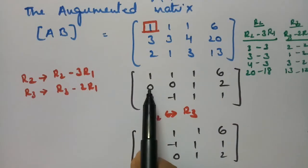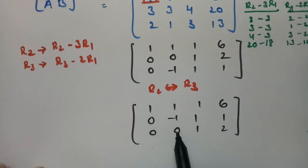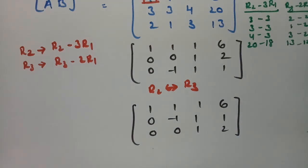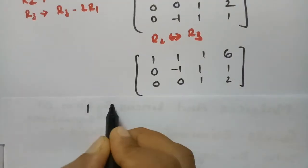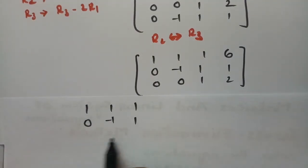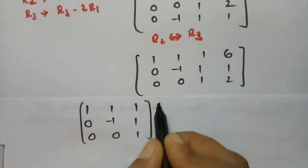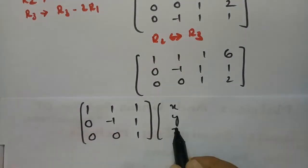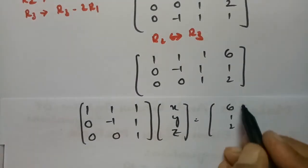Using the first diagonal element I made those entries zero, and using the second I made the next entry zero — it was already 0. Now I can write this back in the form Ax = b: the matrix is 1, 1, 1; 0, -1, 1; 0, 0, 1 times x, y, z equals 6, 1, 2.